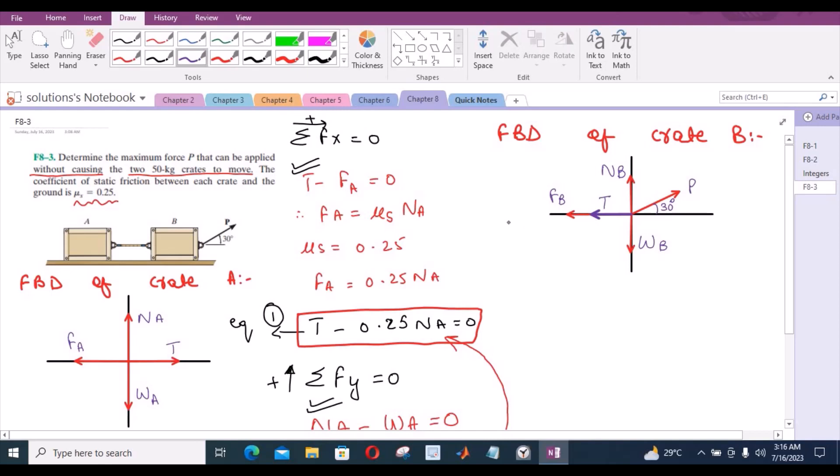I can also break this force P into its components, so I have one horizontal component and one vertical component. Let's label them. So this right here is P sin 30, and that is P cos 30. Now we can apply the equations of equilibrium.